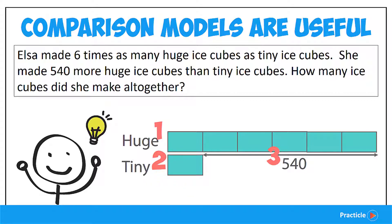The third thing that we can tell is the difference in the number of units between the two objects. In our example, we know the difference between the number of huge ice cubes and the number of tiny ice cubes. And lastly, we can tell the total number of units of everything we have — referring to the huge ice cubes as well as the tiny ice cubes.